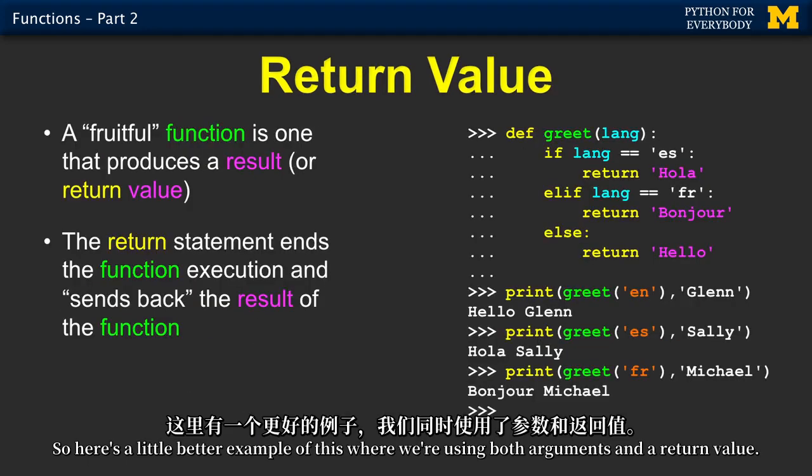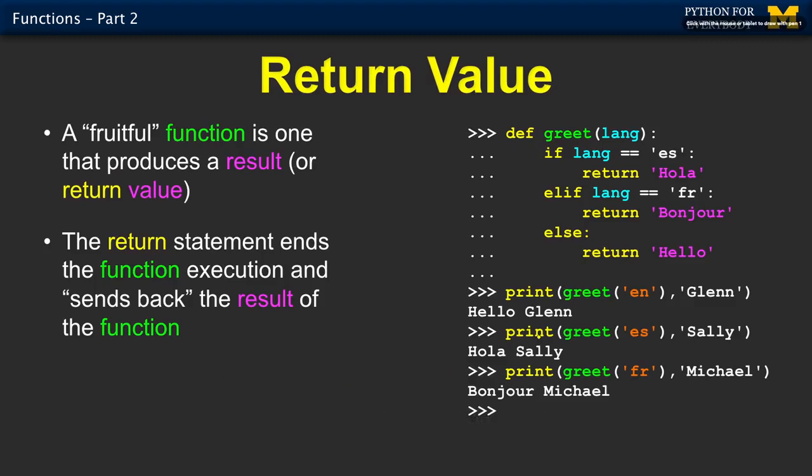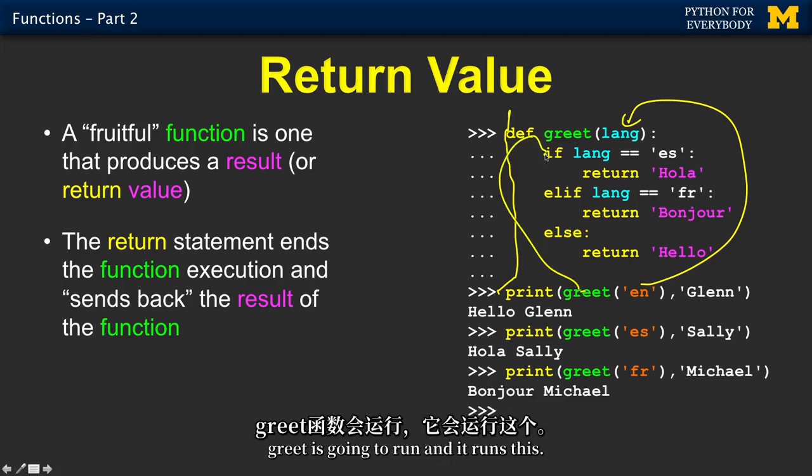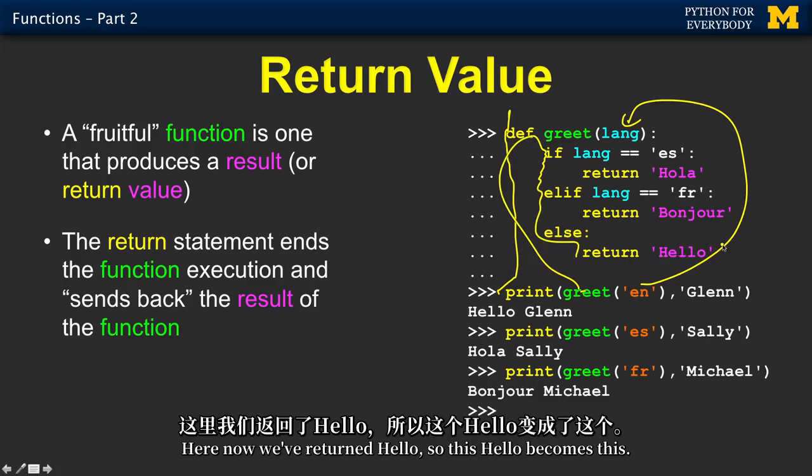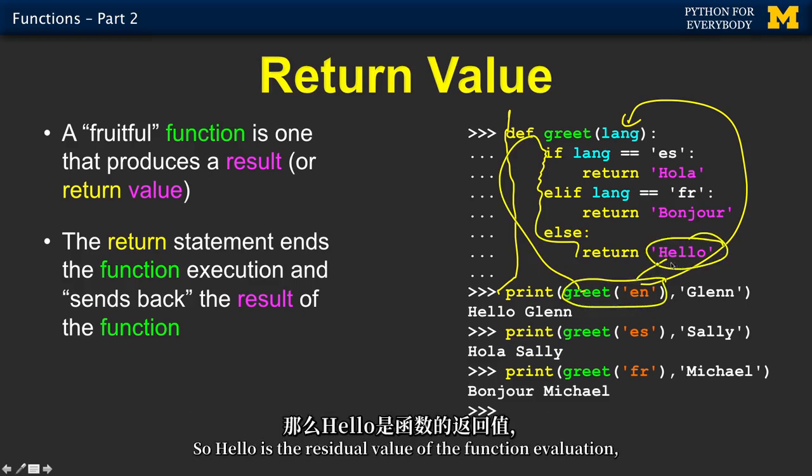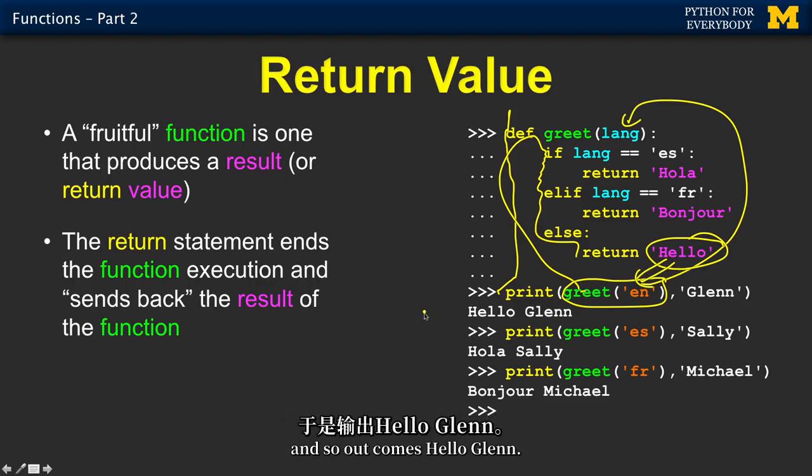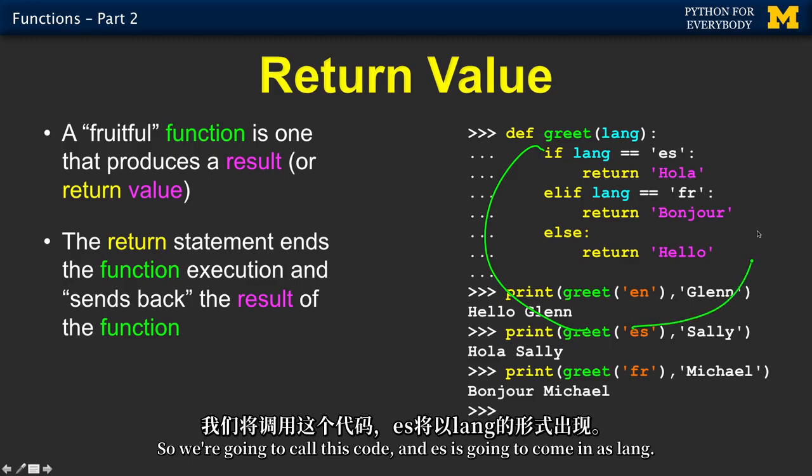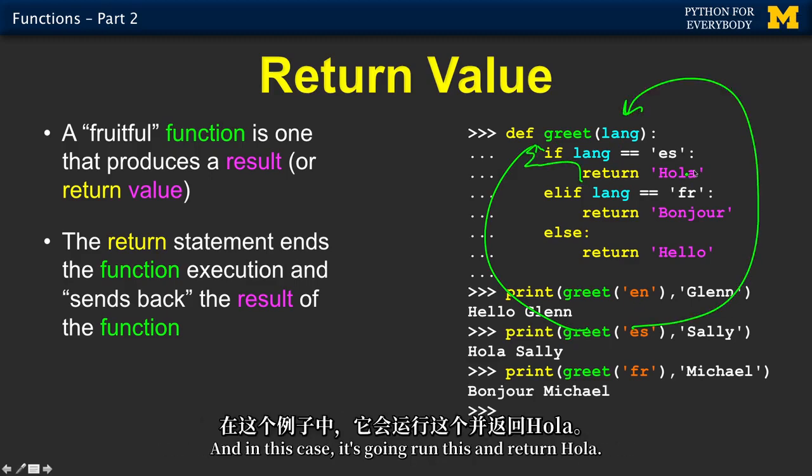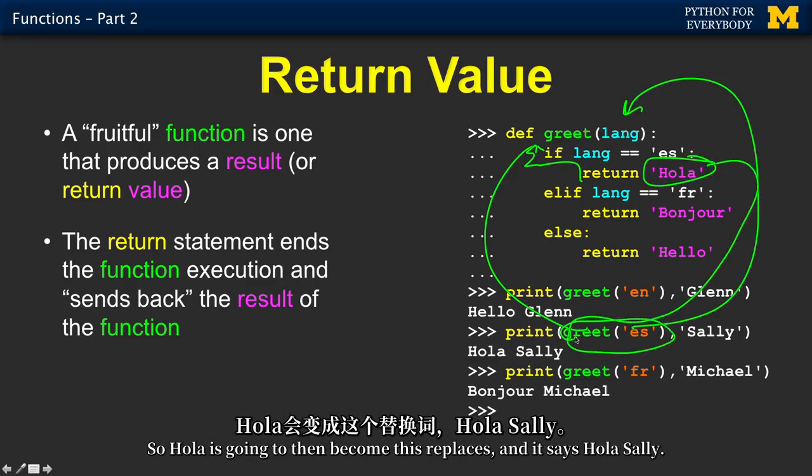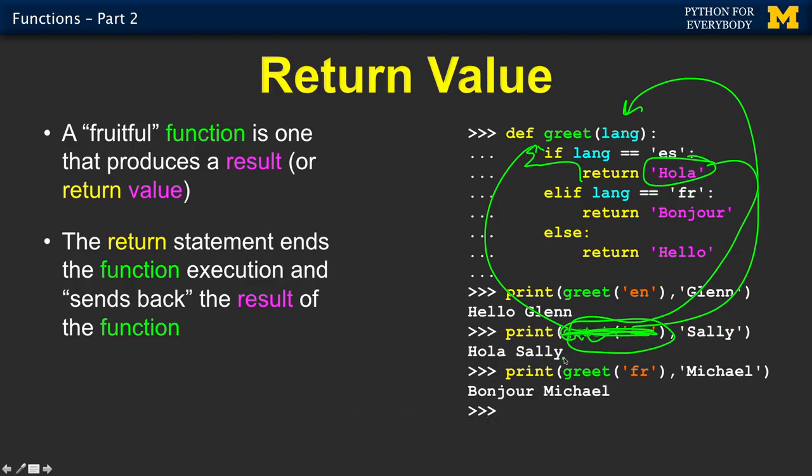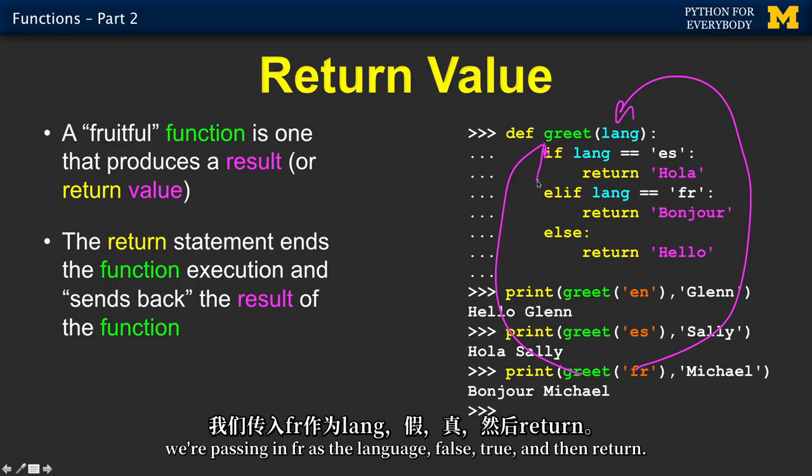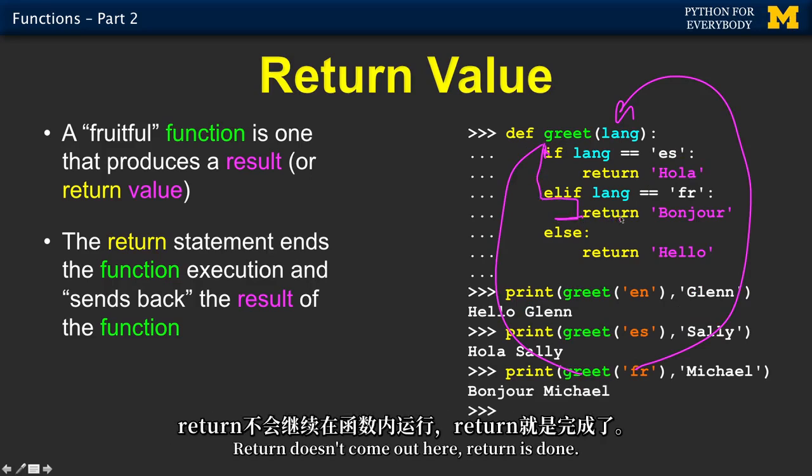So here's a little better example of this where we're using both arguments and a return value. So, again, this just remembers it. We're going to say greet and en. So en is lang. Greet is going to run. And then runs this. Here now we've returned hello. So this hello becomes this. So hello is the residual value of the function evaluation. And so out comes hello Glenn. And then, so now, we do this. Greet es. So we're going to call this code. And es is going to come in as lang. And in this case it's going to run this and return hola. So hola is going to then become this replaces, and that says hola Sally. And so now we're going to do it again. Greet fr. Greet comes up here. We're passing in fr as the language. False. True. And then return. Return doesn't come out here. Return is done. That's it. You're done at that point.